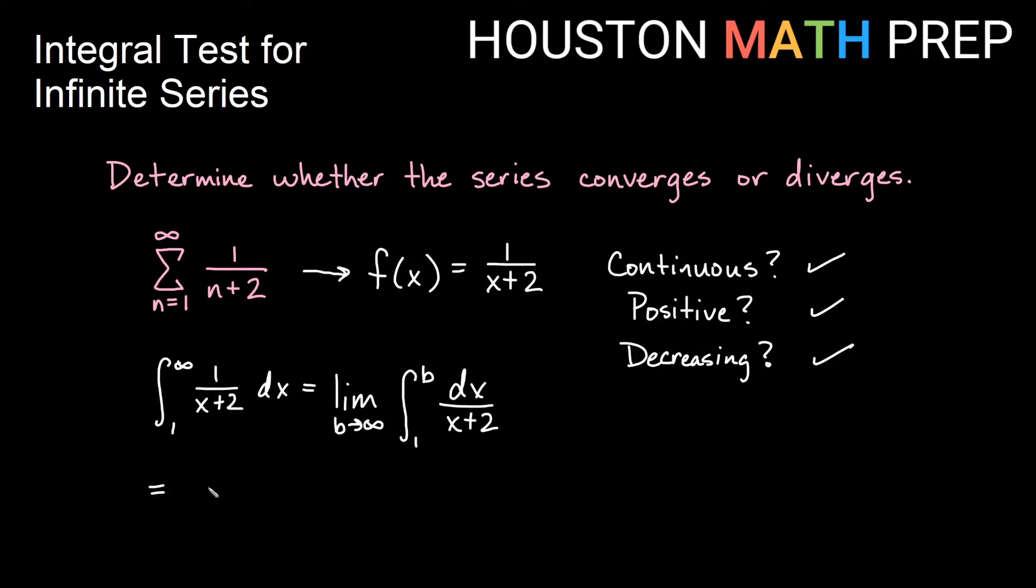So this integral is not so bad here. So remember, we're going to take the limit as b approaches infinity. And we'll be looking at the antiderivative you can get by u substitution is just going to be the natural log of x plus 2. That integral is the natural log rule. So from 1 to b. And if we plug in our bounds, then we will get the limit as b approaches infinity of the first thing here, which would be ln of absolute value of b plus 2. And then we'll go ahead and subtract. When we plug in 1, we'll get ln of 1 plus 2, which is just 3.